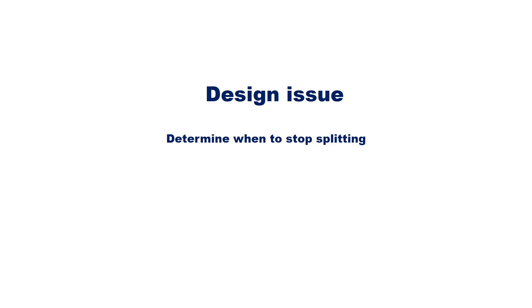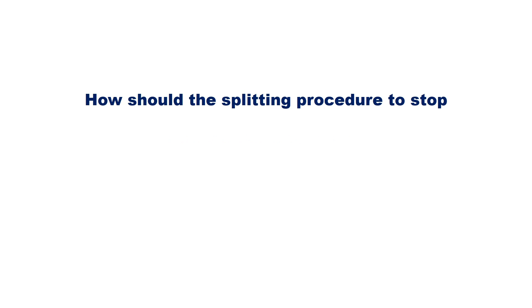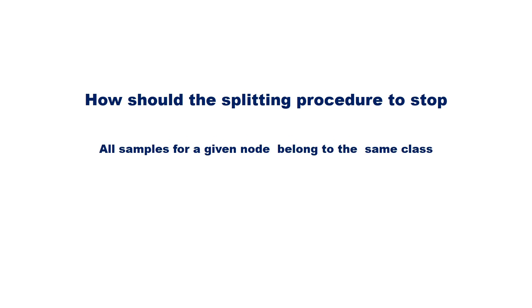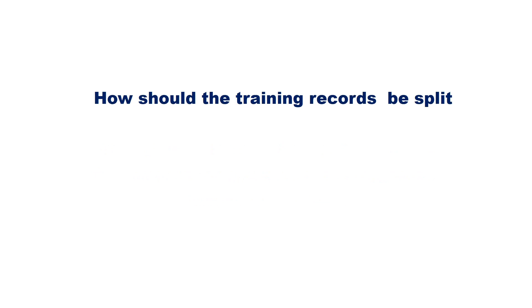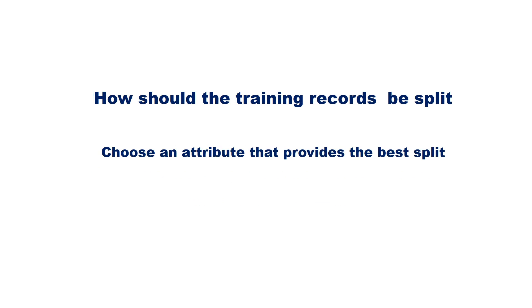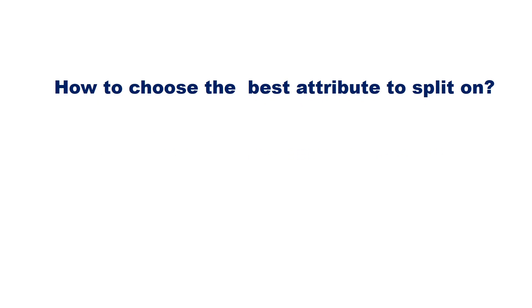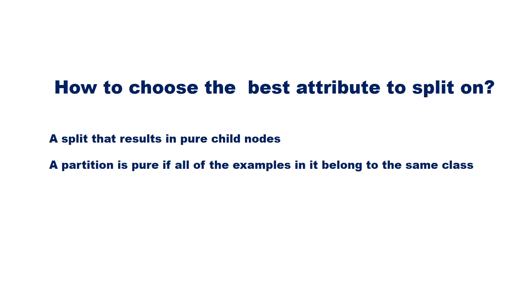While learning the decision tree, two main issues must be addressed: the criteria to determine how to split the records, and the condition to stop the tree splitting process. Possible criteria to stop splitting include: all samples for a given node belong to the same class, there are no remaining attributes for further partitioning, or there are no samples left. To split, we choose an attribute that provides the best split — ideally one that results in pure child nodes. A partition is said to be pure if all examples in it belong to the same class.